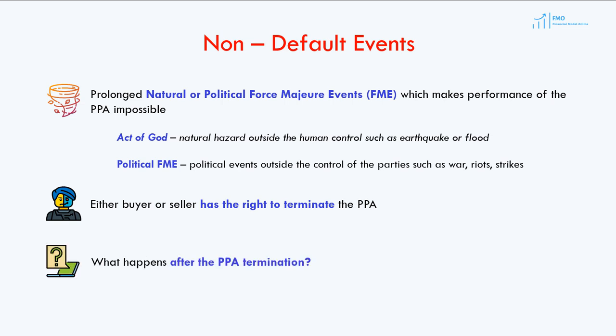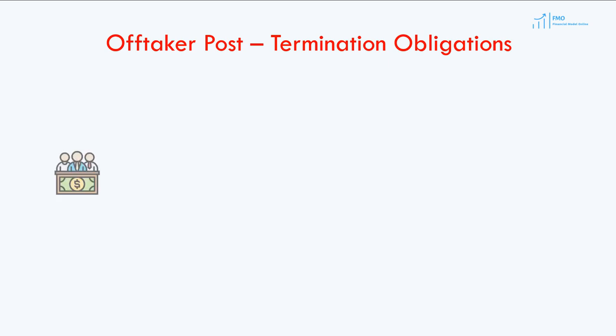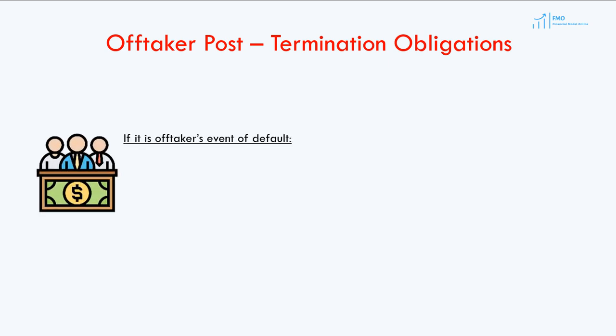The key question is: what happens after PPA termination? If the energy seller terminates the PPA due to the off-taker's default — such as non-payment for energy generated — the energy seller has the right to require the off-taker to purchase the project.